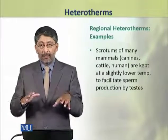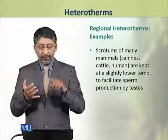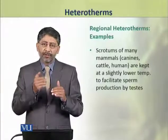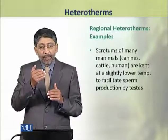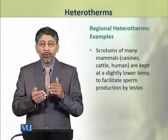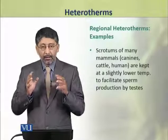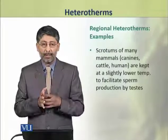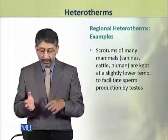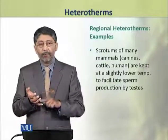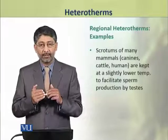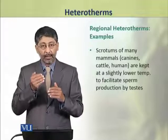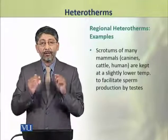Many mammals, for example canines, cattle and humans, have the temperatures of their scrotums comparatively lower than the core body temperatures. This helps to facilitate sperm production by the testes. Like these, endothermic animals provide an example of regional heterothermy.